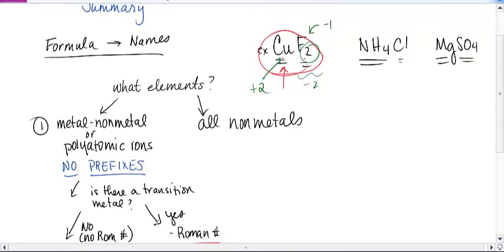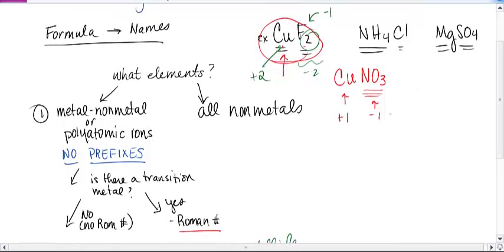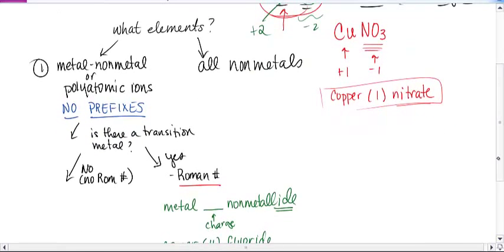If there was a polyatomic ion, let's say it was CuNO3, I do not change the ending on a polyatomic ion. This polyatomic ion is negative one, which means the charge on copper is plus one. And so this becomes copper (I) nitrate. I just leave the ending as is.